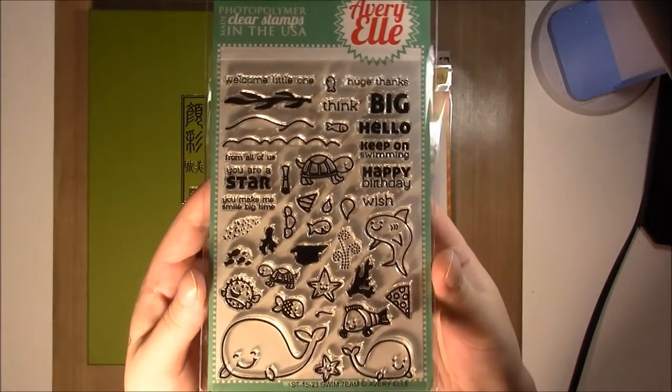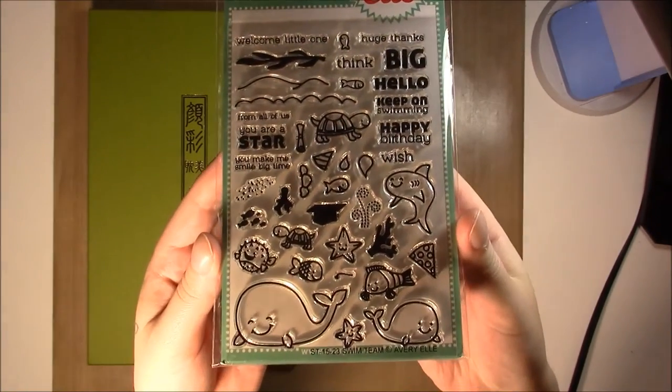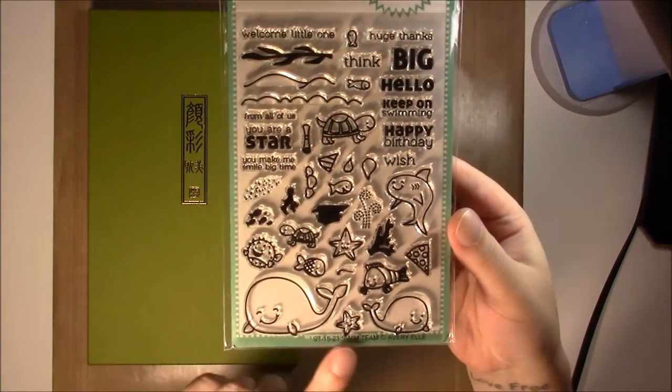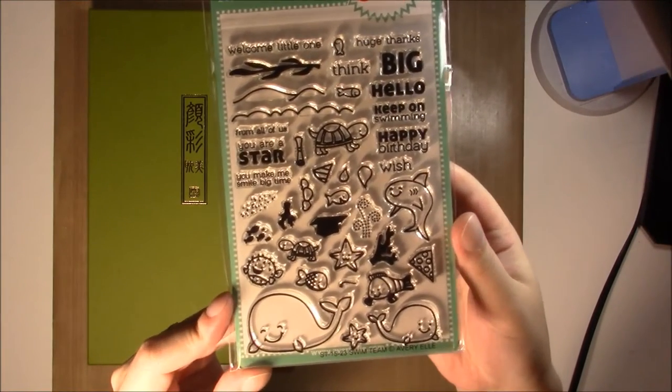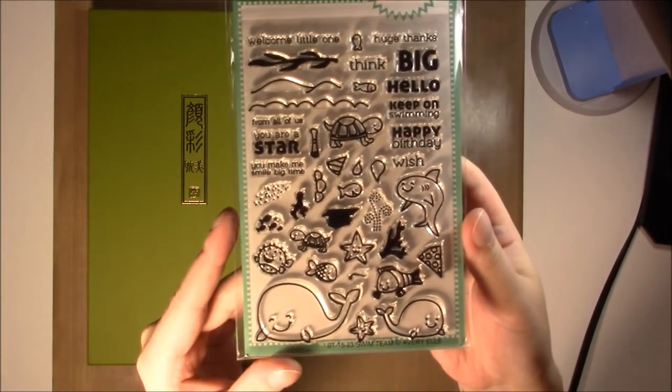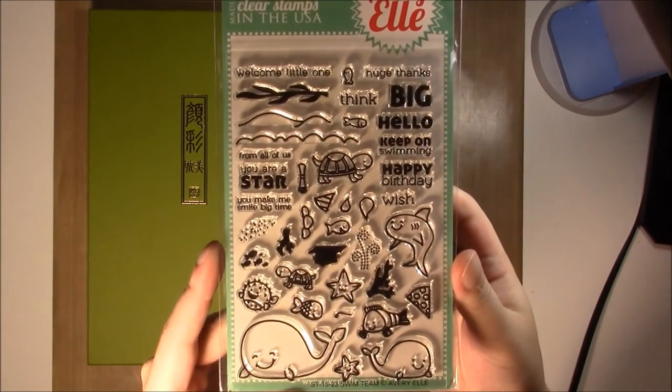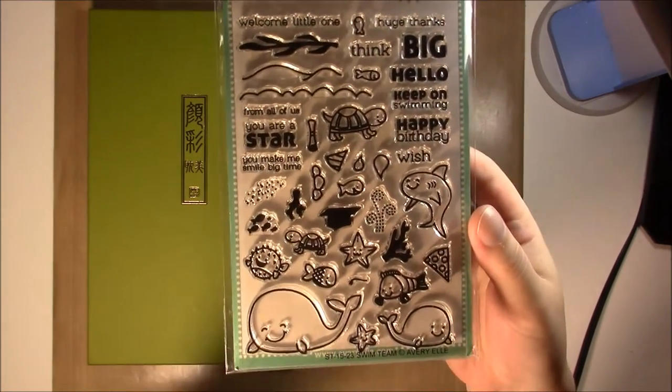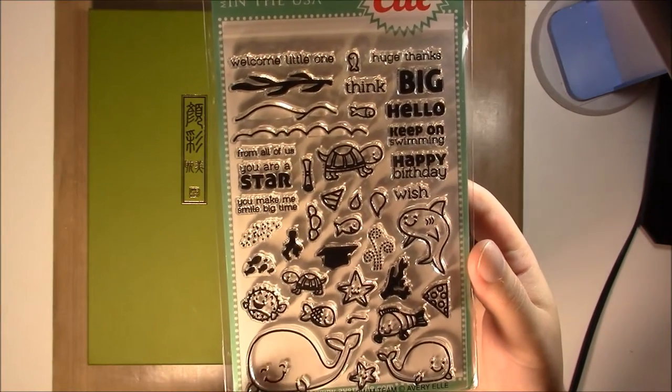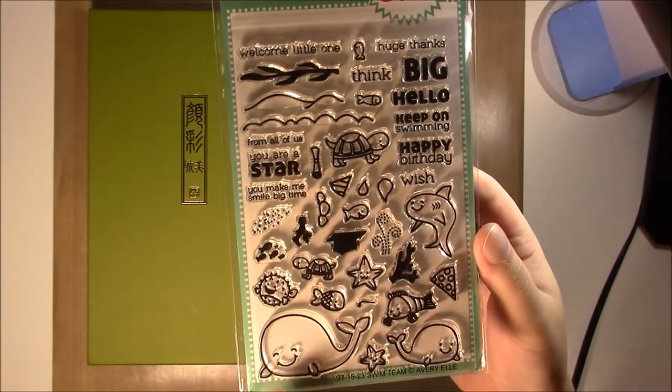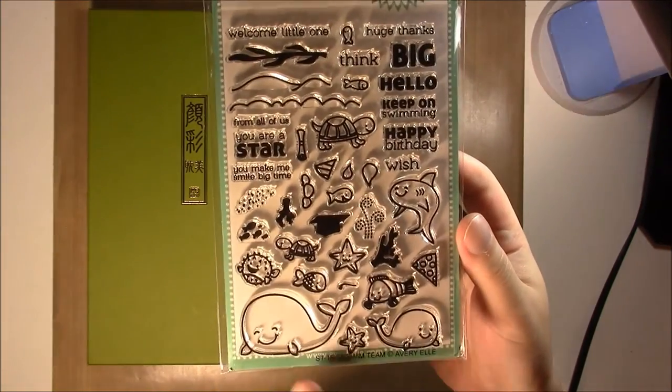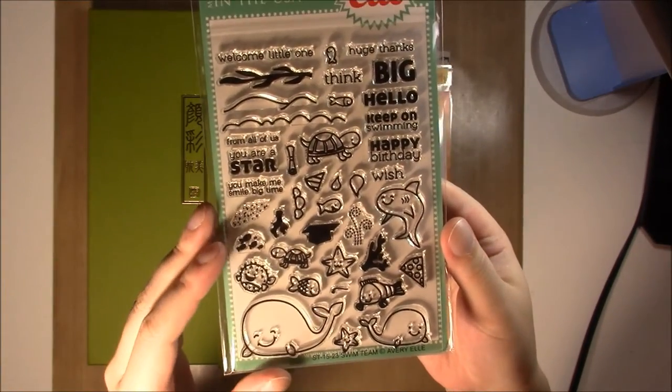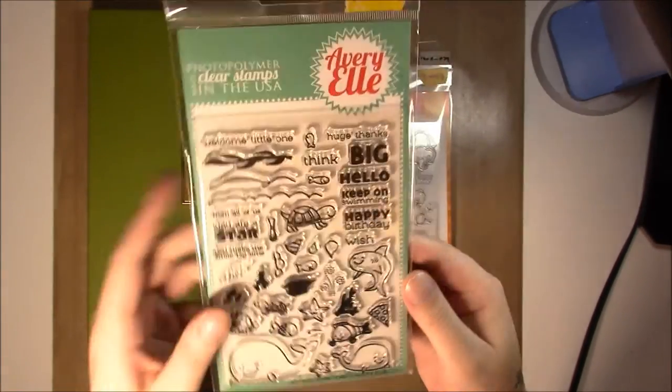And then I really ordered for this little set here, which is by Avery Elle, which is one of the few Avery L's that I have. It's called Swim Team. And I wanted it to go with the Lawn Fawn set that I got, so just basically more undersea creatures and more fun. And I like the little whale. He's not, I mean, he's similar to the Lawn Fawn one, but I like that he has a little companion there. And then I thought the shark was really cute, so I was thinking about, like, mixing and matching them together would be really fun.